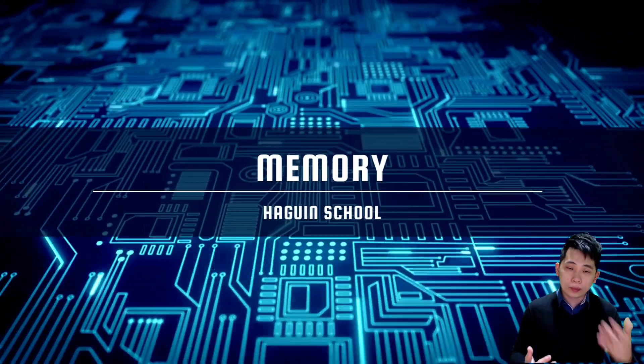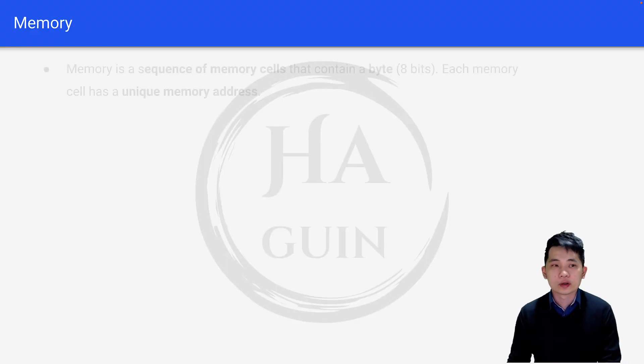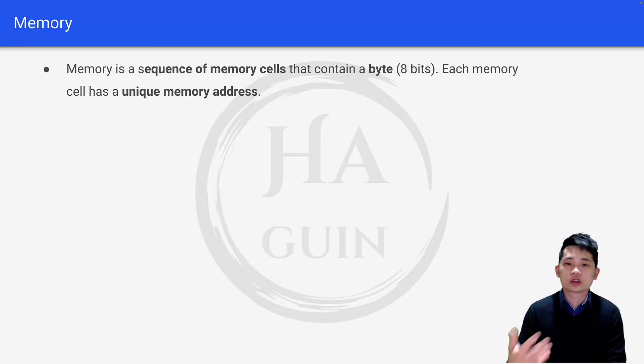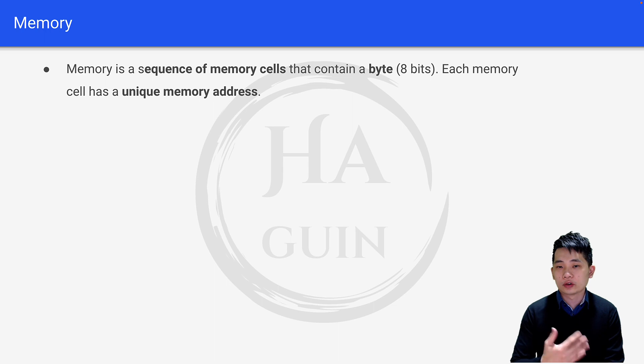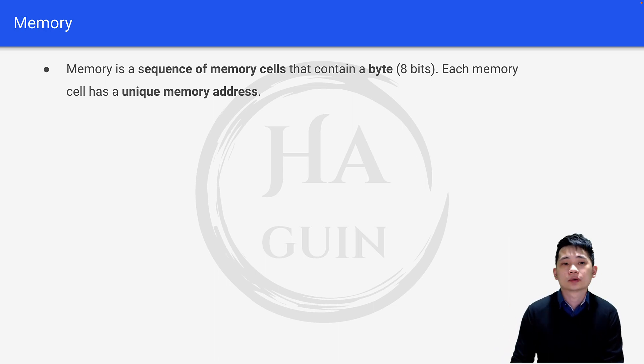Alright, let's look into memory. So first of all, what is memory? Memory is a sequence of memory cells that contain a byte, which is 8 bits, and each memory cell has a unique memory address.